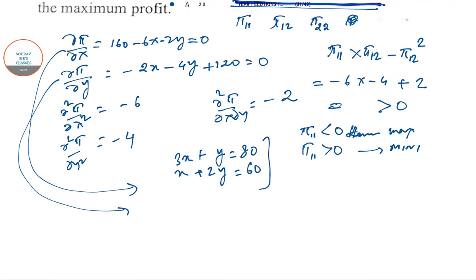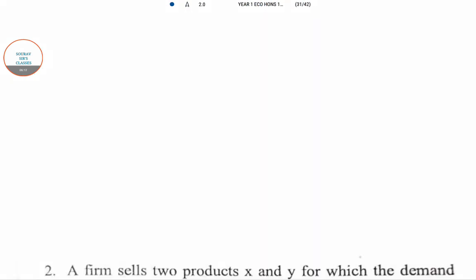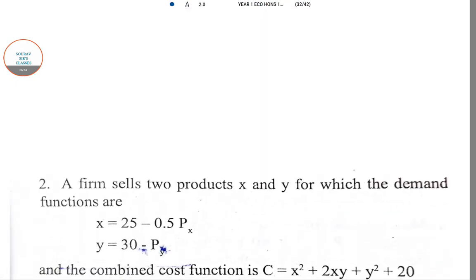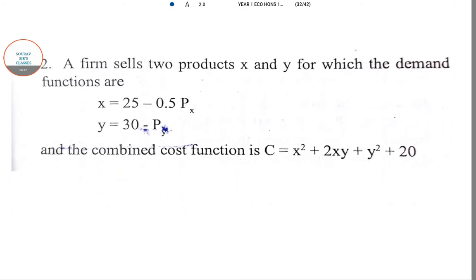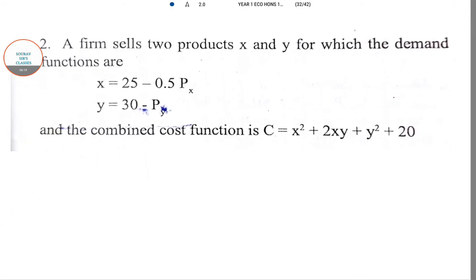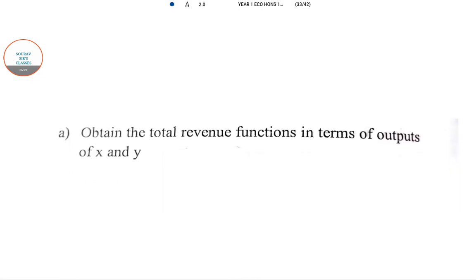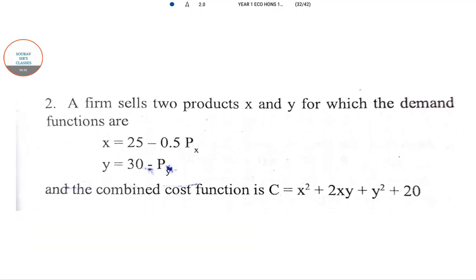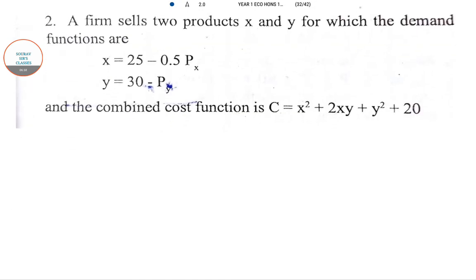So here a firm sells two products x and y, the demand functions are given, and the combined cost function is C = x² + 2xy + y² + 20. Now what they have asked over here is to find the total revenue functions in terms of outputs. Remember that this is px and this is py.